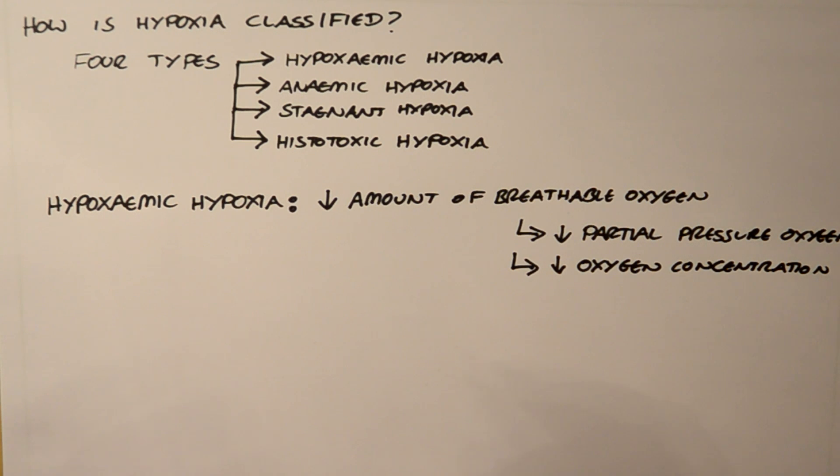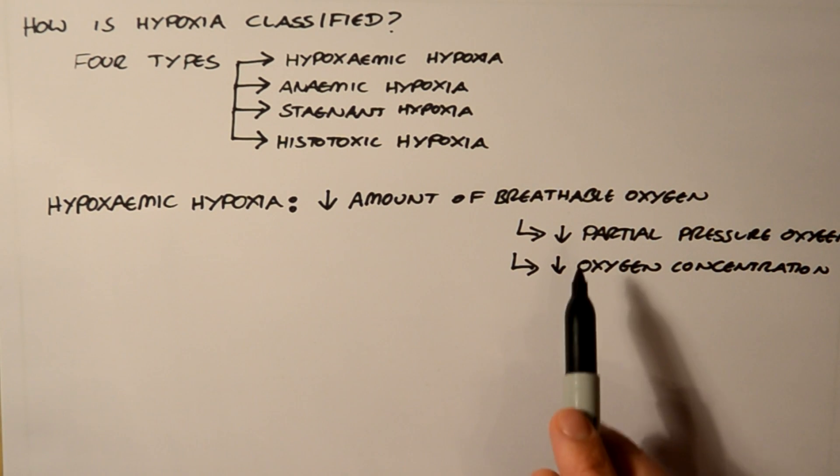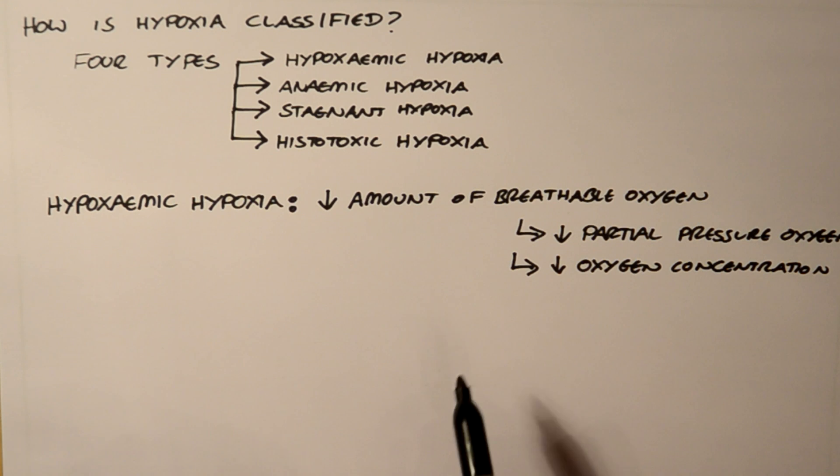Same with a mountain climber who's gone very high. There's less oxygen available for these people to actually take up. This is despite the concentration of oxygen being the same. Because in these scenarios where you've gone very high in altitude, the amount of oxygen in the air is reduced because of the reduction in partial pressure, but the concentration is still the same, still 21%.